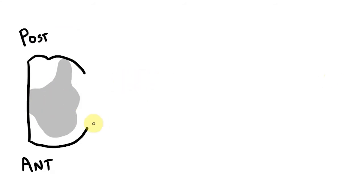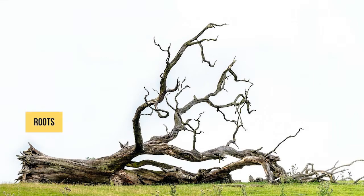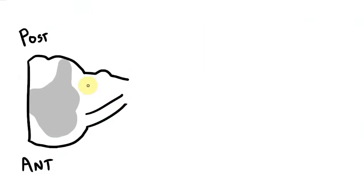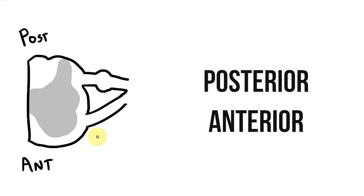Next I need to draw the structures that leave the spinal cord to form the spinal nerve. Just like a tree the spinal nerve starts with roots and we have one at the front and one at the back. Now in neuroanatomy we tend not to use the terms anterior and posterior. Instead we use ventral and dorsal. So this anterior root will be our ventral root and the posterior root will be our dorsal root.